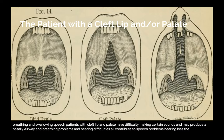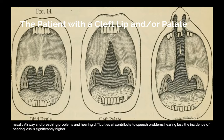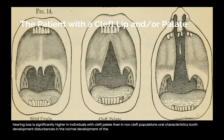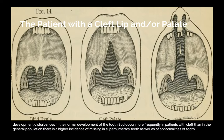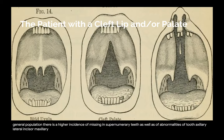Hearing loss: the incidence of hearing loss is significantly higher in individuals with cleft palate than in non-cleft populations. Oral characteristics — tooth development: disturbances in the normal development of the tooth bud occur more frequently in patients with cleft than in the general population. There is a higher incidence of missing and supernumerary teeth as well as abnormalities of tooth form. Commonly missing teeth include the maxillary lateral incisor, maxillary premolar, and mandibular second premolars, usually corresponding to the side of the mouth that has the cleft.